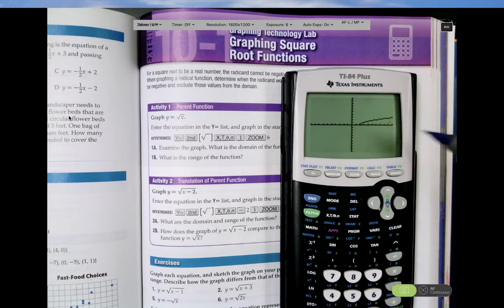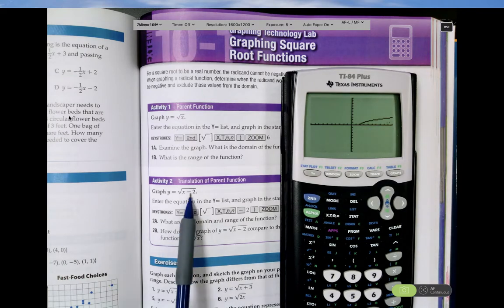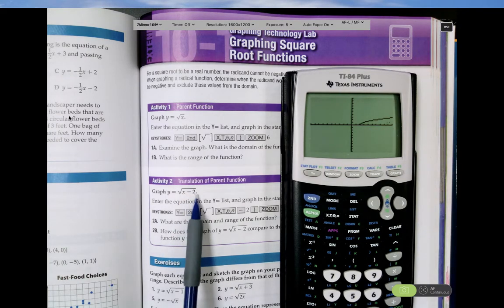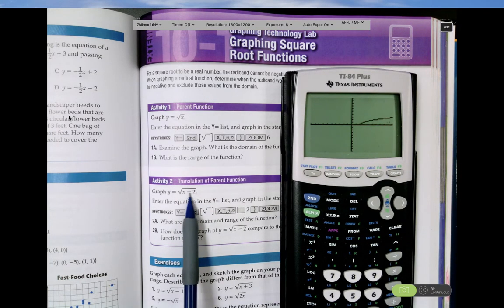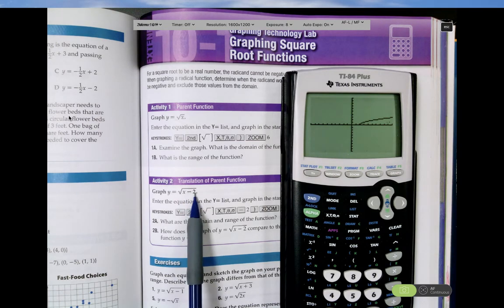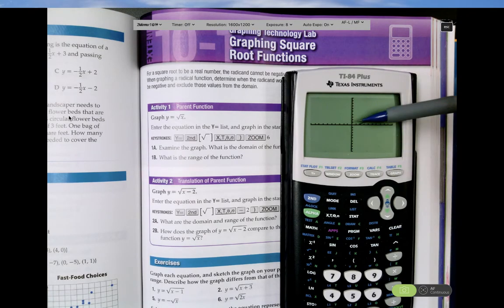And just as I would expect, it's been shifted over positive 2 units because it's x minus a positive 2. That minus sign is like, don't put, it's not negative 2. It's x minus a positive 2. And so that shifts it over 2 units to the right.